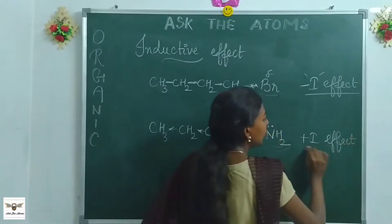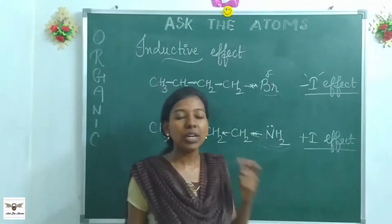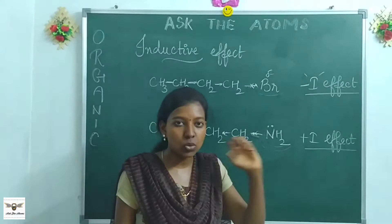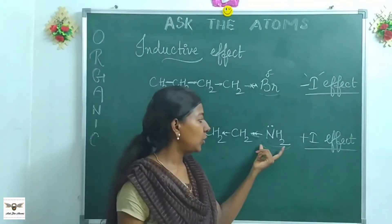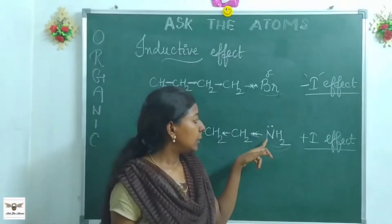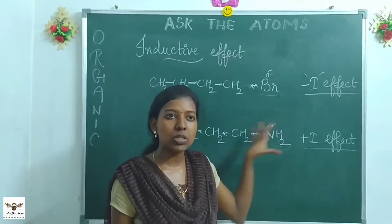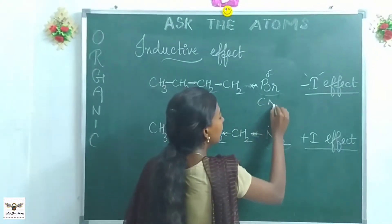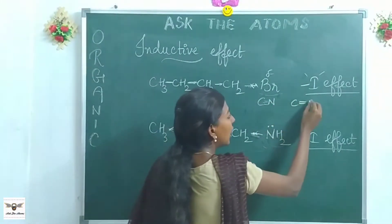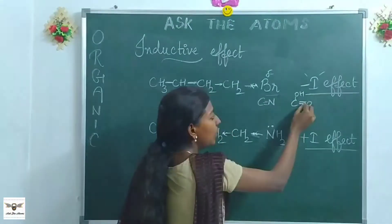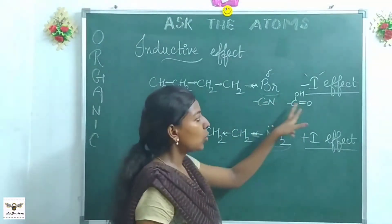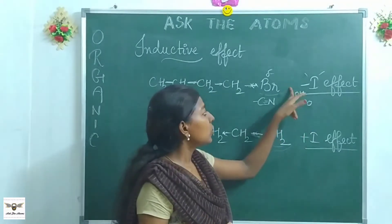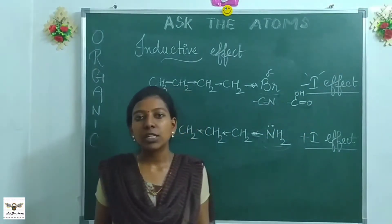You don't have to memorize everything. For minus I effect: any electronegative atom will pull electrons towards itself. For plus I effect: when you see a group that has a lone pair of electrons — especially nitrogen, oxygen — or groups with multiple bonds like cyanide (C≡N) or carboxylic group (COOH), those groups are electron-withdrawing and show minus I effect. So this covers the inductive effect. Let's move to the second one.